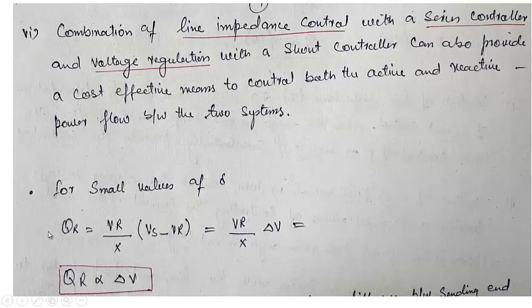For small values of delta, from the power flow equations, Qr will be equal to Vr divided by X times (Vs minus Vr). This Vs minus Vr can be taken as delta V, so Qr equals Vr over X times delta V. For these two constant values, Qr is proportional to the change in voltage. The reactive power is dependent upon the voltage difference between the two ends, that is the sending and receiving end.